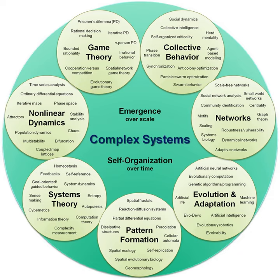The term complex systems often refers to the study of complex systems, which is an approach to science that investigates how relationships between a system's parts give rise to its collective behaviors and how the system interacts and forms relationships with its environment. The study of complex systems regards collective, or system-wide, behaviors as the fundamental object of study. For this reason, complex systems can be understood as an alternative paradigm to reductionism, which attempts to explain systems in terms of their constituent parts and the individual interactions between them.